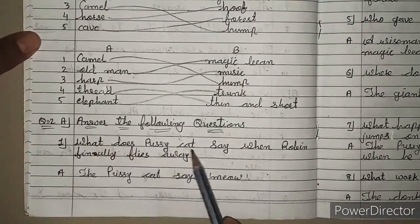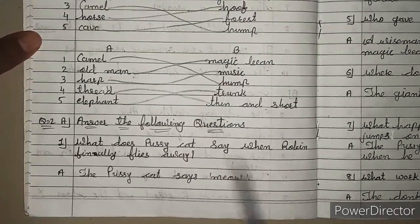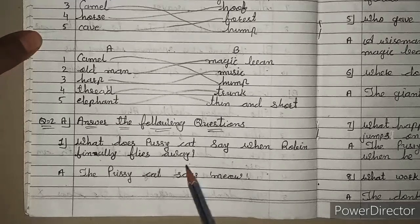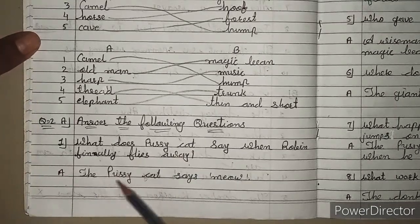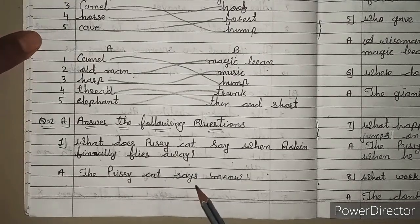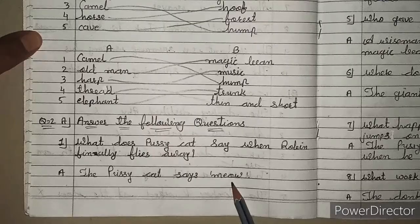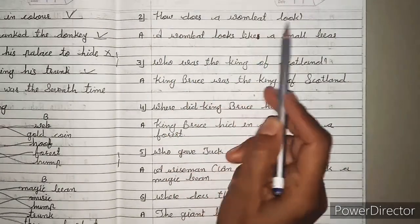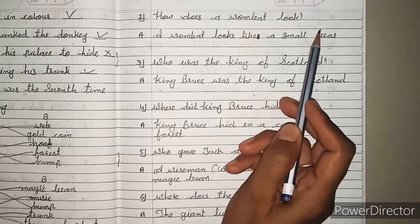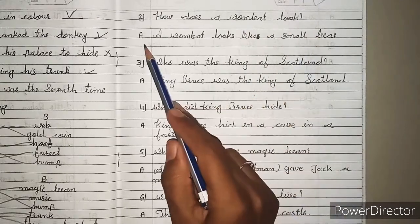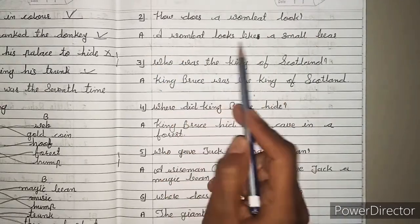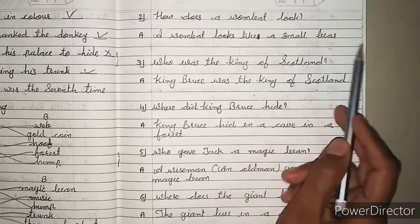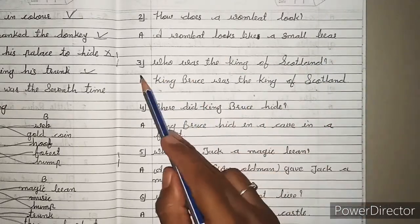Question 2A. Answer the following questions. 1. What does Pussycat say when Robin finally flies away? Answer: The Pussycat says meow. 2. How does a Wombat look? Wombat कैसा दिखता था? Answer: A Wombat looks like a small bear.